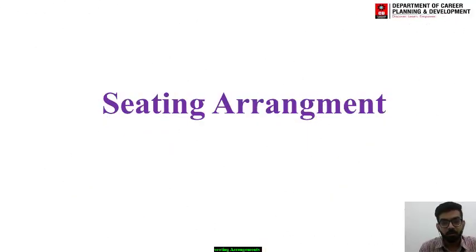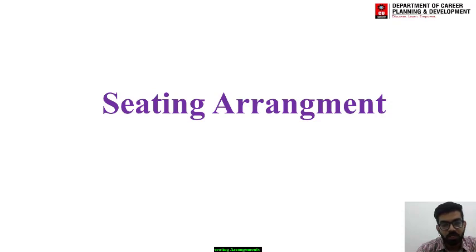Hello students. I am an active trainer from the Department of Career Learning and Development, and today we are going to discuss the topic of seating arrangements. Basically, in seating arrangements there are three types of questions asked by the examiner: number one is circular arrangements, number two is linear arrangements, and number three is rectangular arrangements.